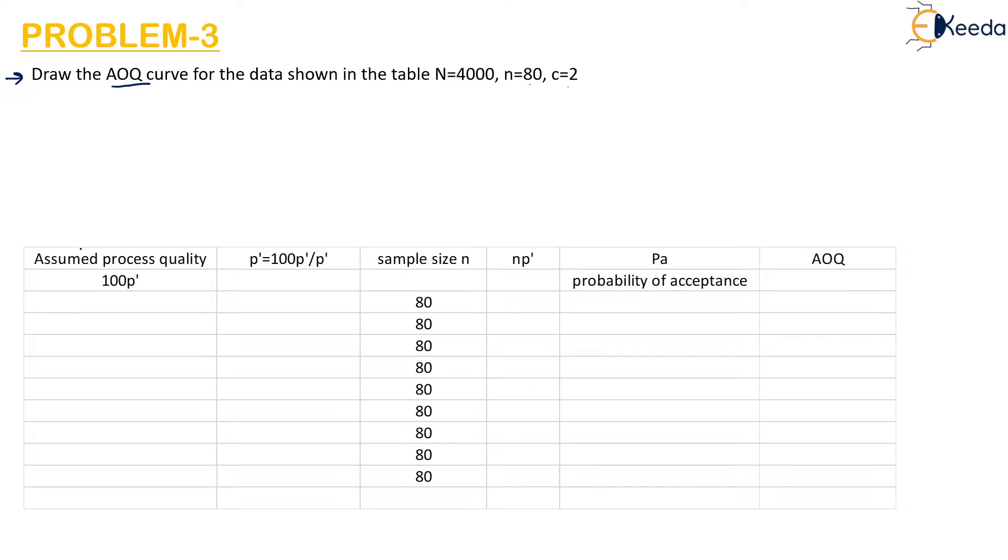From the table what do we need? AOQ is a product of 100P' into PA, where this is the percent defective and this is the probability of acceptance. First of all we have to find this 100P'. This is the assumed process quality. Usually we assume it as 1, 2, 3 till 9. We usually consider that the process quality is varying between 1 to 9 percent.